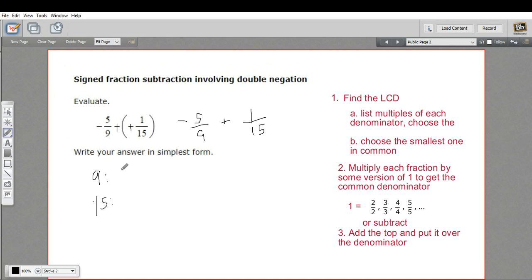So 9, and 9 times 2 is 18, and 9 times 3 is 27, 9 times 4 is 36, and 9 times 5 is 45, and 9 times 6 is 54. Hopefully, we've gone far enough. And 15. Okay, 15 times 1 is 15, 15 times 2 is 30, 15 times 3 is 45. Ah, there we go. So there is our least common denominator.